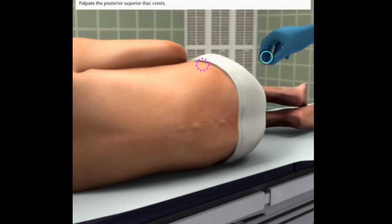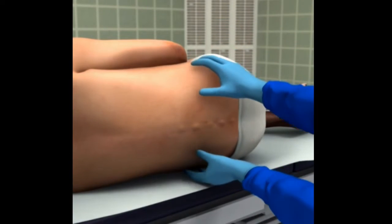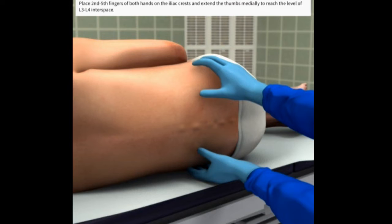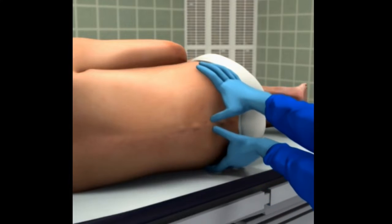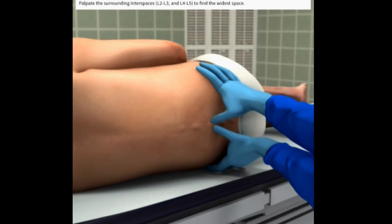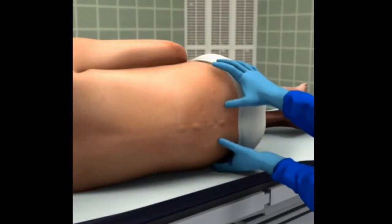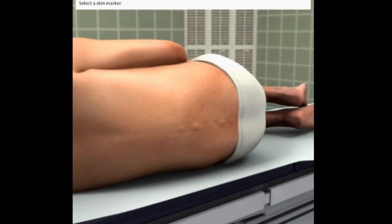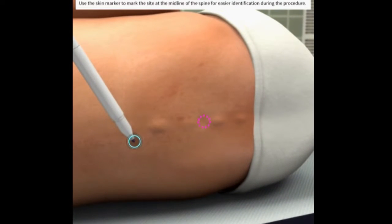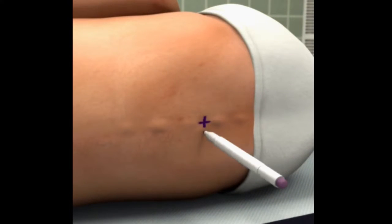Key Anatomy. The iliac crest is identified and palpated with the physician's hand. The physician's thumbs are then placed medially to palpate and identify the spinous processes in the midline of the back. The interspace where the thumbs fall approximates the L4-L5 interspace and is the appropriate location to perform a lumbar puncture. In adults, the L3-L4 space can also be used as it lies below the spinal cord.